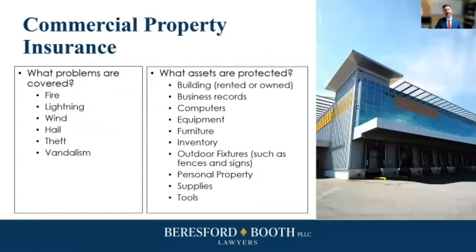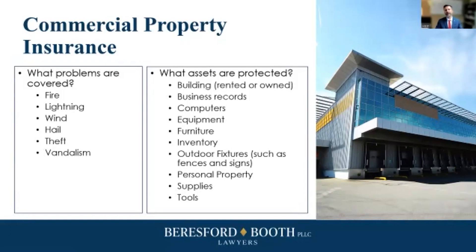Next up: commercial property insurance. This covers what we think of as losses from fire, lightning, wind, and other unexpected losses to your property — as opposed to your liability for something like a deck fall. To clarify on the deck example: the presupposition is that you knew the deck had a problem and should have fixed it but didn't — that's your liability. Commercial property insurance also covers theft and vandalism. Interestingly, it covers outdoor fixtures that a lot of homeowner's insurance doesn't cover, such as fences, gates, and signs. It covers various personal property, equipment, and furniture. So if you've got a business, it covers a lot of your belongings.